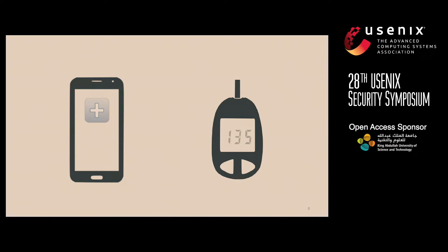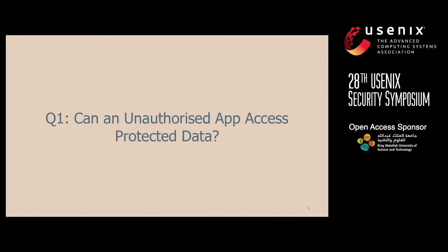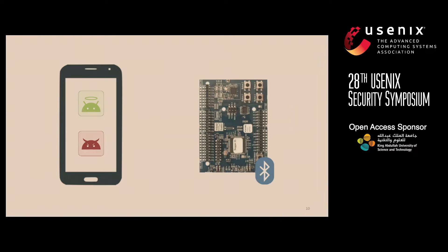Taking the most common use case — a BLE device that interfaces with a mobile application — where the device has an official application it's supposed to interface with, we ask: would another unauthorized application residing on the same mobile device be able to access pairing-protected data from the BLE device? To test this, we prototyped a BLE device using the Nordic Development Kit with a protected characteristic. We also developed two Android applications: a good app which is supposed to access the protected characteristic, and a malicious app which is not.